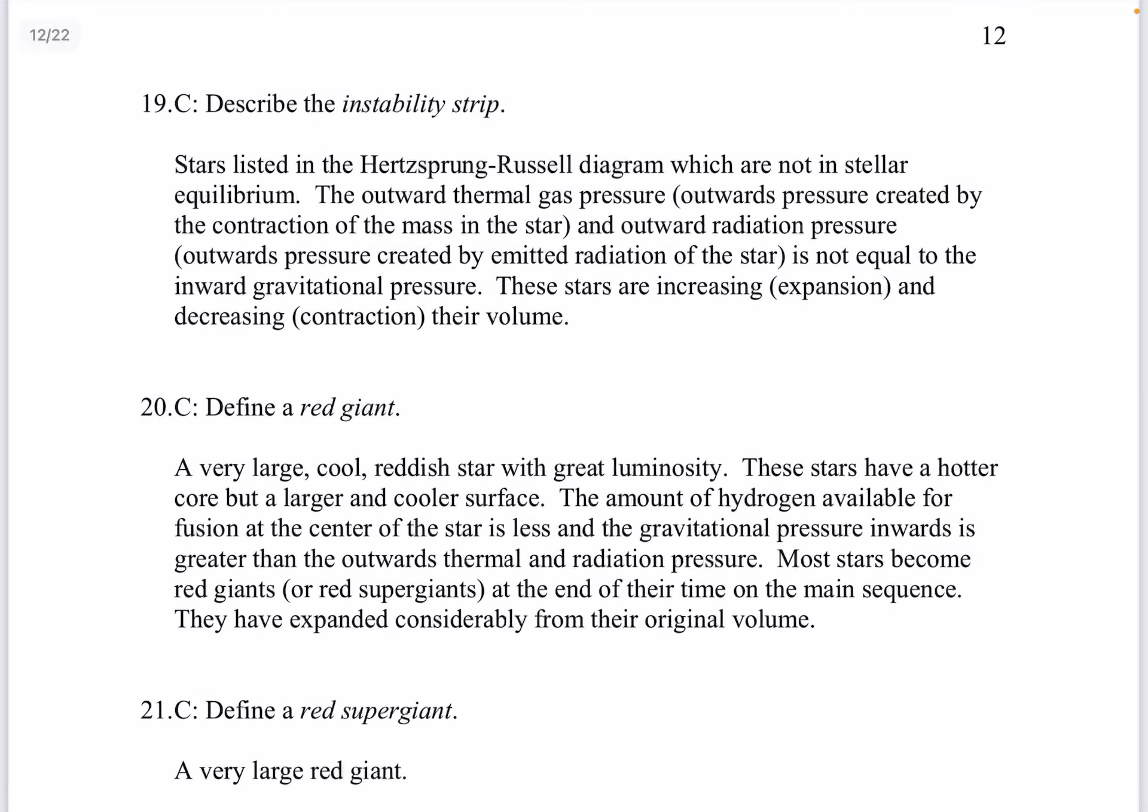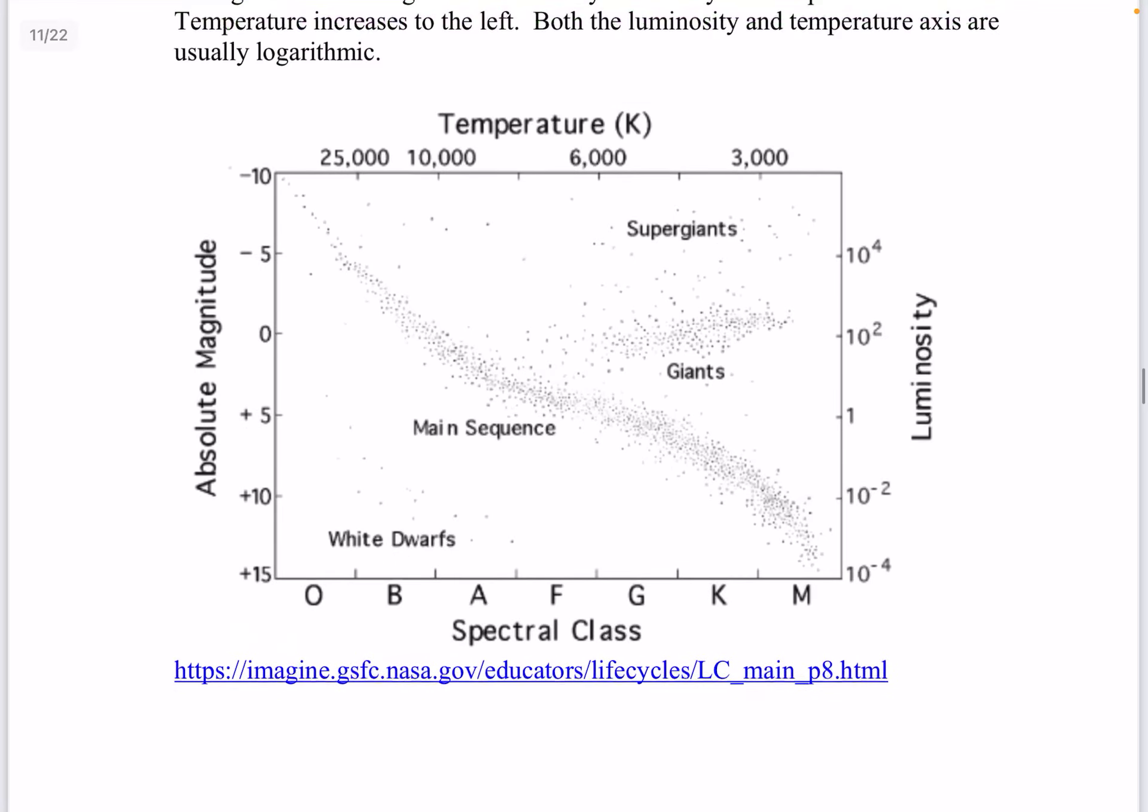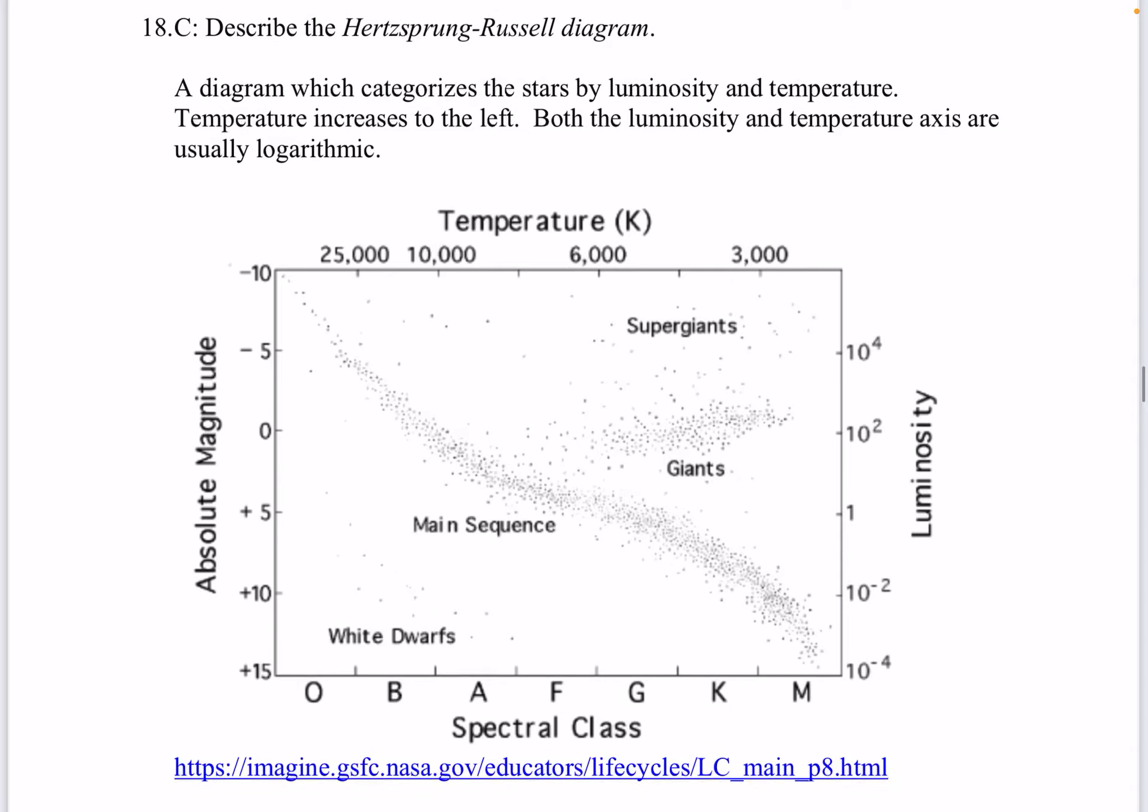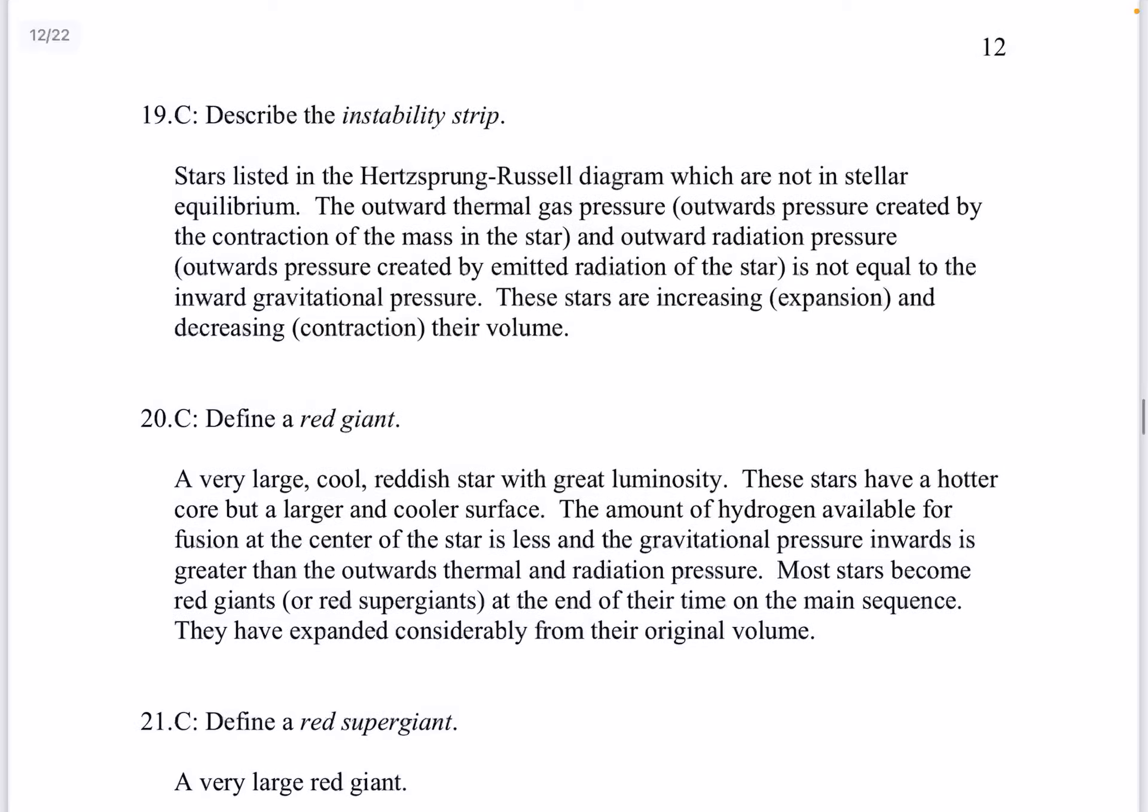Question 19. Describe the instability strip. These are stars listed in the Hertzsprung-Russell diagram which are not in stellar equilibrium. The outward thermal gas pressure and outward radiation pressure is not equal to the inward gravitational pressure. These stars are increasing and decreasing their volume. So the instability strip is not in this image. But you could go online and you could type in Hertzsprung-Russell diagram on your favorite search engine. And you could see many images of this diagram and you could find the instability strip.